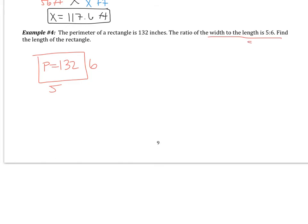Instead, it means that we had some ratio, 5x to 6x, and we divided out that common number x. So let's call our sides 5x and 6x. This is going to be 6x, and this is going to be 5x. Now, remember that to find perimeter, we add up all the sides. So I have 6x plus 6x plus 5x plus 5x equals 132. So this ends up being 22x equals 132. So x equals 6.